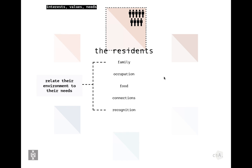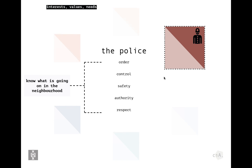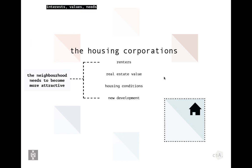For residents, interests and needs include family, occupation, food on the table, connections with each other, and genuine recognition of their issues — meaning they need their environment to relate to their needs. For the police, interests include order, control, safety, authority, and respect; broadly, they need to know what's going on in the neighborhood.